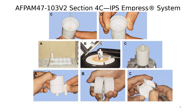The Ivoclar Vivadent pressable oven in school has programs already inserted. Select the program needed for EMAX — the program will ask what type of ingot you're using (high opacity, low translucency, etc.) and what size ring you're using (100 gram or 200 gram). The 200-gram ring requires a longer pressing process. Insert the ring with ingot and plunger, select the program, press start, and the program runs automatically.